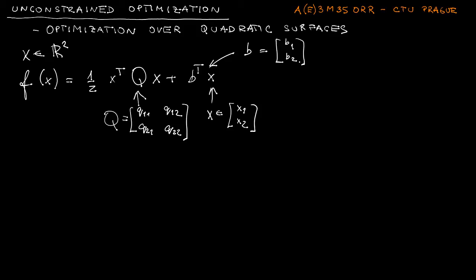In order to find first-order necessary conditions of optimality we need to get the gradient of f. In the scalar case the answer would be easy — it would be Q times x plus B — but in the vector case it's always confusing whether it should be Q transposed, or x transposed, or B transposed. So let's look at how this can be found systematically.